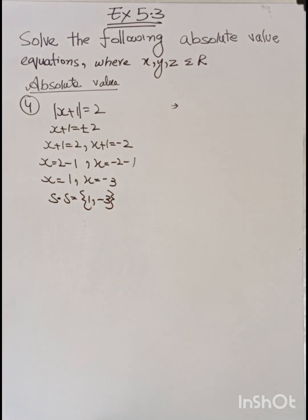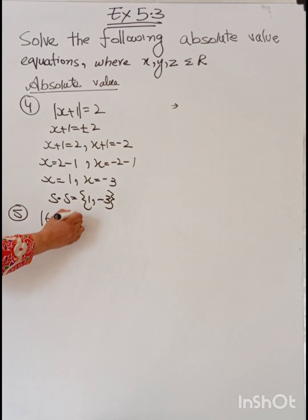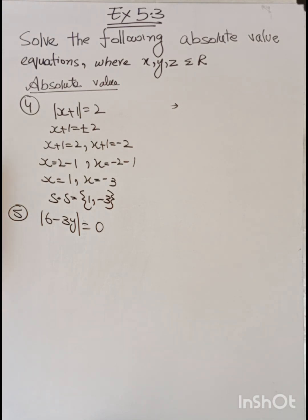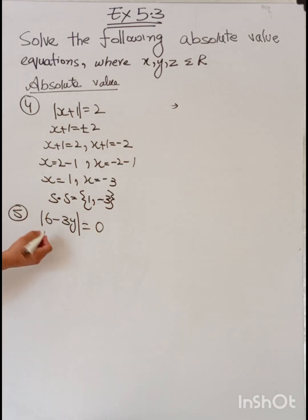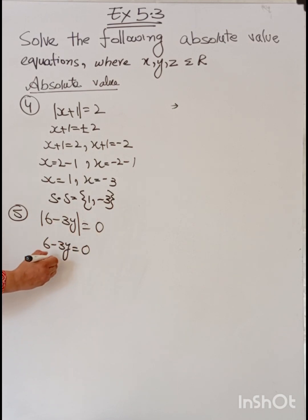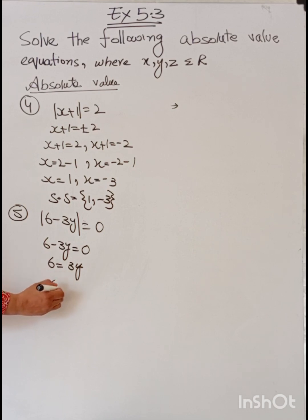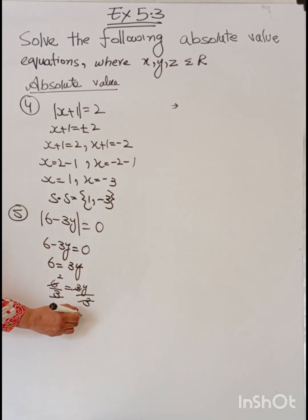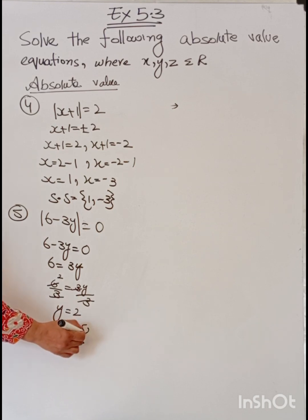Question number 5 has equals to zero. Zero also has a solution — absolute value starts from zero, so we can solve it. We write 6 - 3y = 0. When -3y goes to the other side it becomes +3y. Dividing both sides by 3: y = 2. So the solution set is only {2} — we have only one solution here, not two.